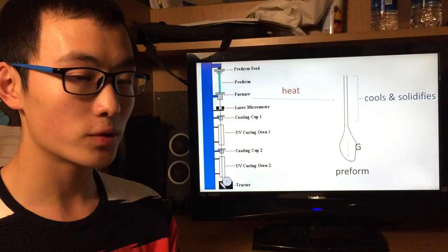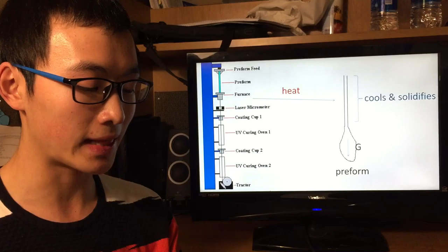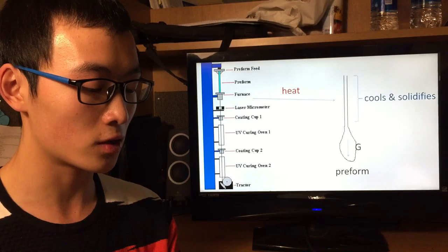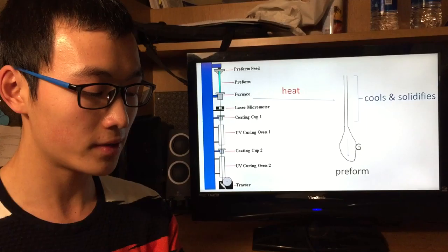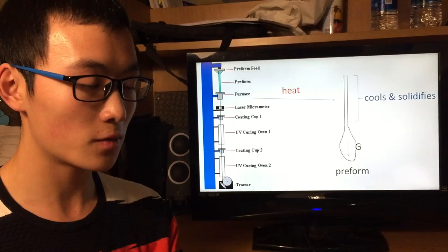Traveling behind the globe is a thin strand of glass that cools and solidifies quickly. Then the equipment operator threads the glass strand through the rest of the devices on the tower, which includes several buffer coating applicators and ultraviolet coloring ovens.